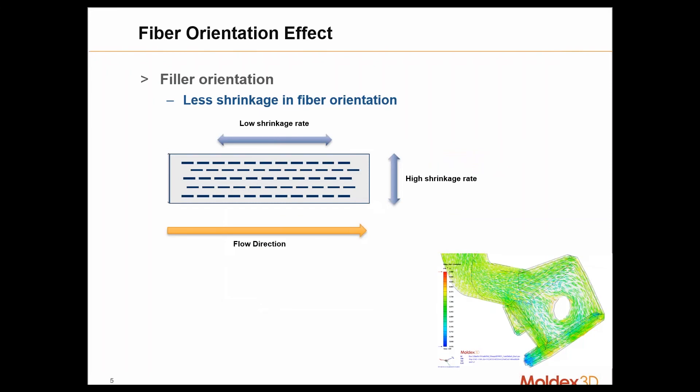When you add fibers to the material, whether glass fibers or carbon fibers, that's also going to impact the shrinkage of that part. It's going to have kind of an inverse effect. You're going to have a lower shrinkage rate in line with those fibers, which is typically in the flow direction, and a higher shrinkage rate perpendicular to that direction.